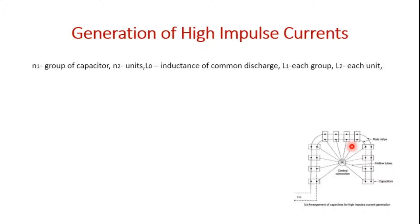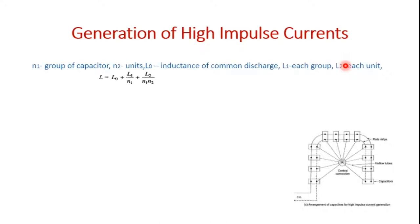If there are N1 number of groups of capacitors, each consisting of N2 units, then L0 is the inductance of the common discharge path, L1 is that of each group, and L2 is that of each unit. The effective inductance L is given as: L = L0 + L1/N1 + L2/(N1 × N2).